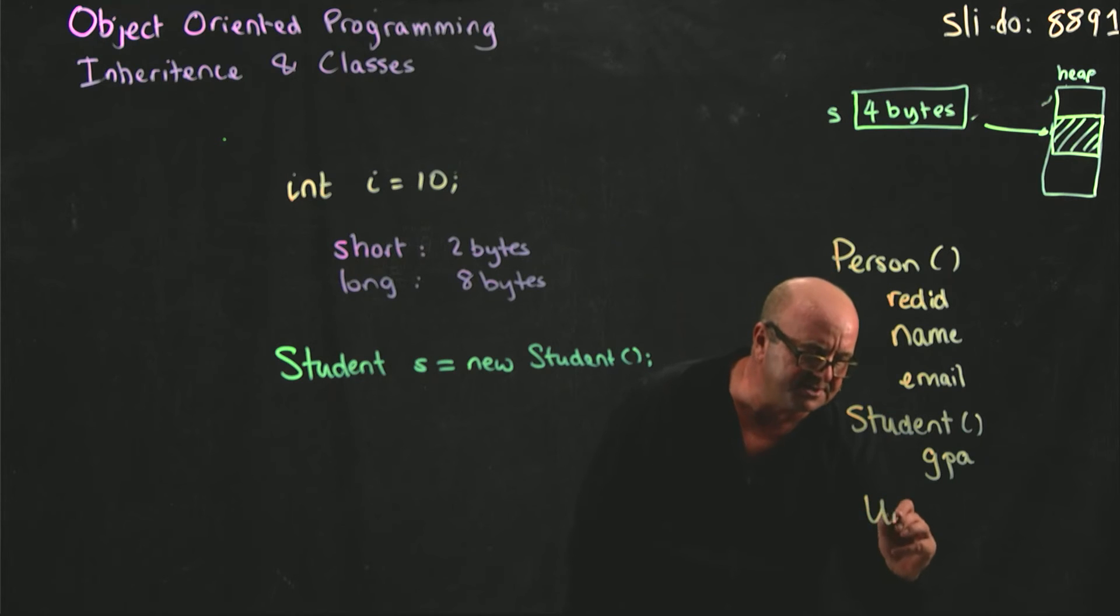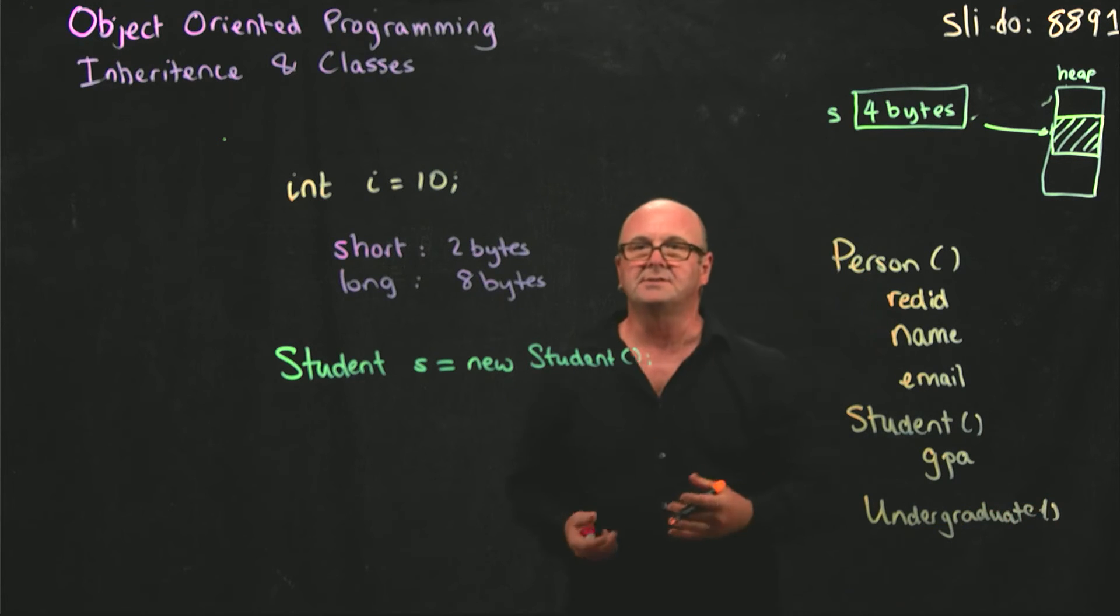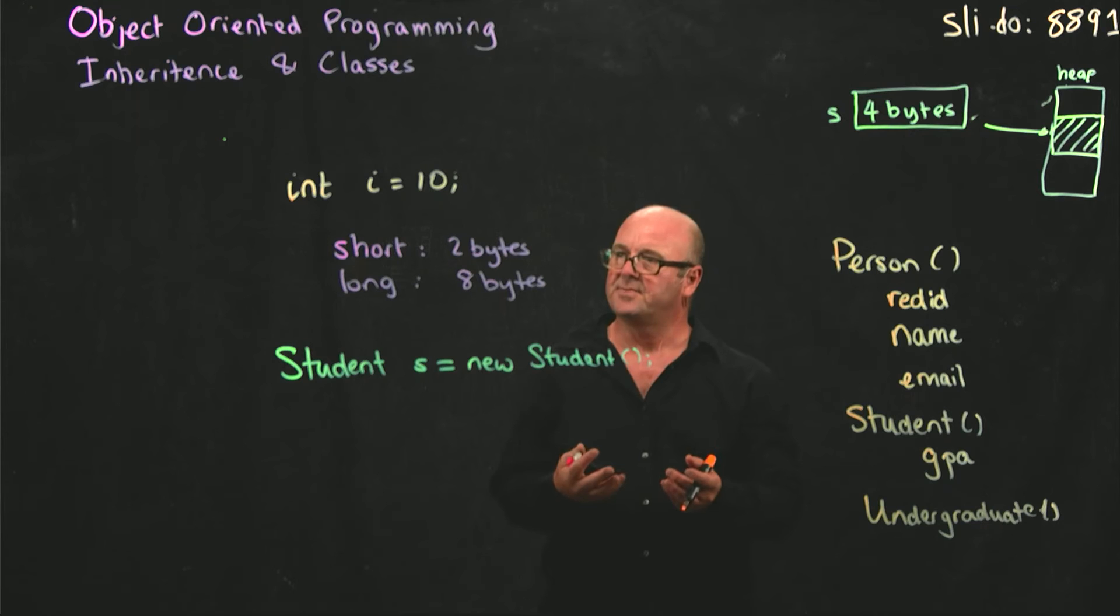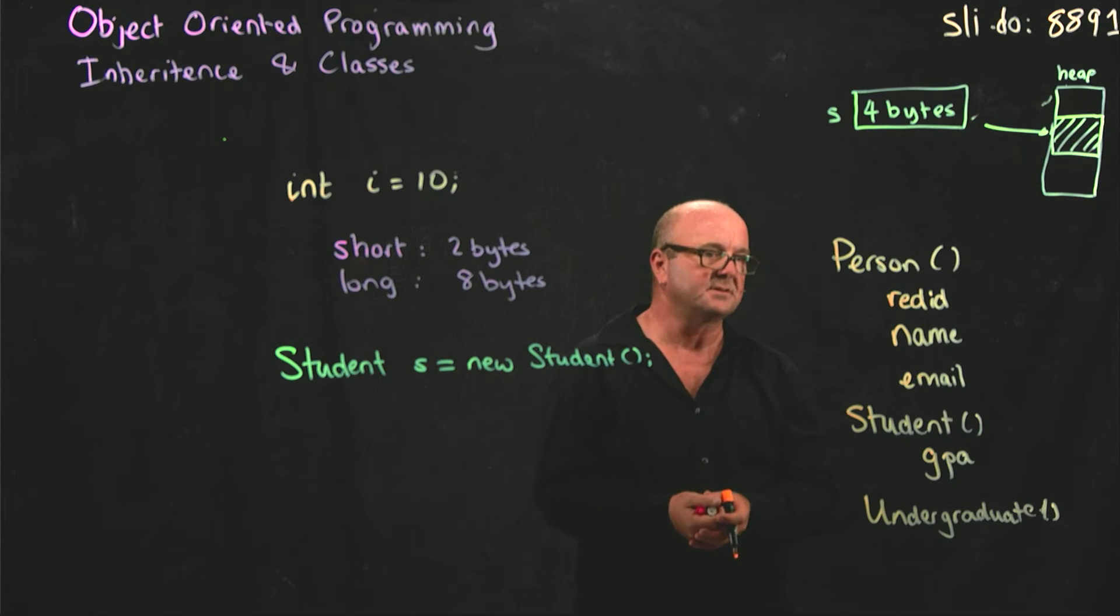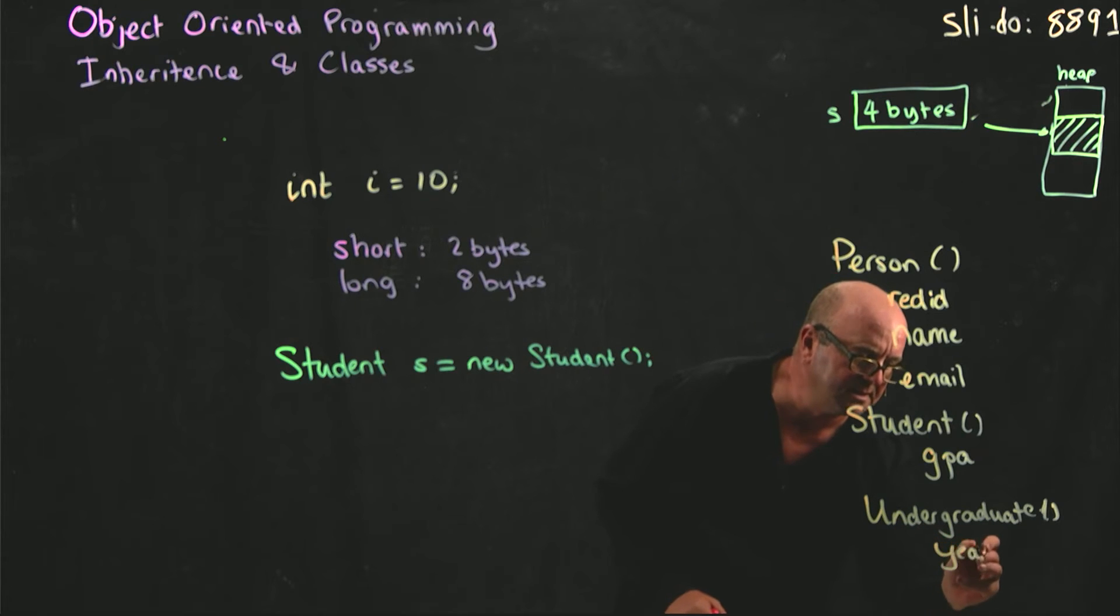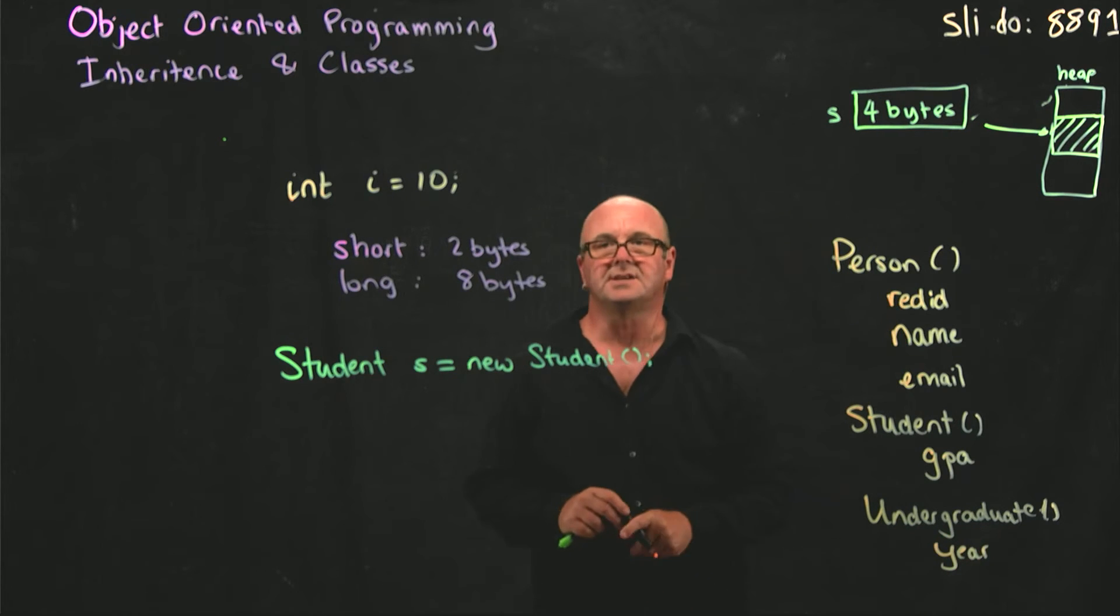And then maybe I have an undergraduate class. Because we have different kinds of students. We have graduate students. We have PhD students. We have masters students. We have undergraduate students. We have former students. And we might want to keep information about all of those. And so my undergraduate student maybe has a year variable associated with it.